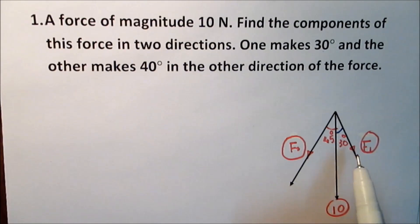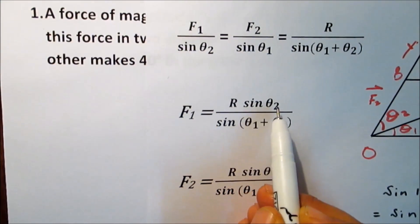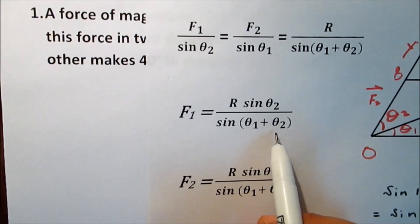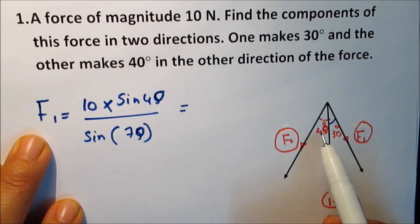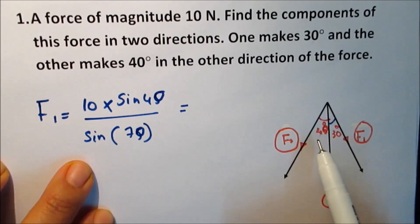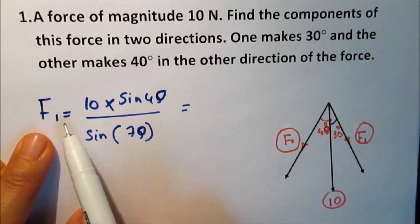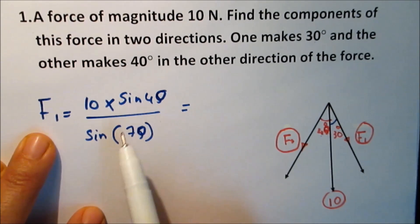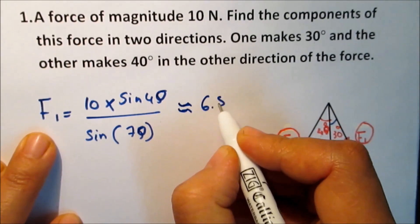Now find F1 and F2. By the previous rule, F1 equals R sine(theta2) over sine(theta1 plus theta2). F1 equals 10 times sine(40) over sine(theta1 plus theta2). The sum of the two angles, theta1 plus theta2 equals 30 plus 40 equals 70. So F1 equals 10 sine(40) over sine(70), which is nearly equal to 6.8 newtons.